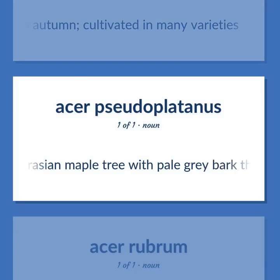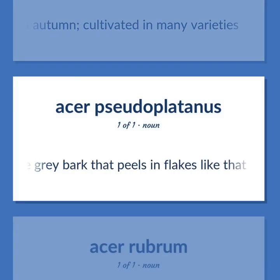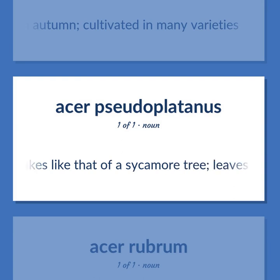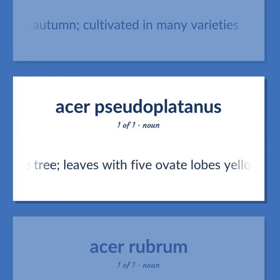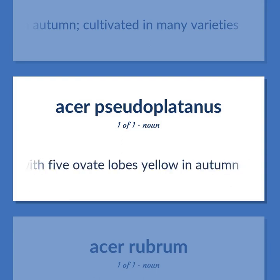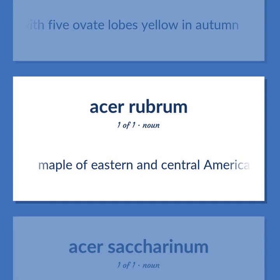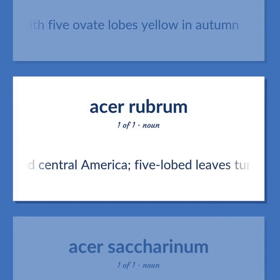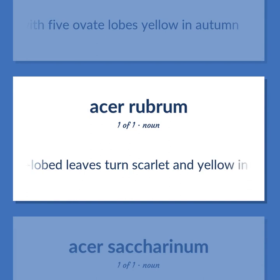Eurasian maple tree with pale gray bark that peels in flakes like that of a sycamore tree, leaves with five ovate lobes yellow in autumn. Maple of eastern and central America, five-lobed leaves turn scarlet and yellow in autumn.